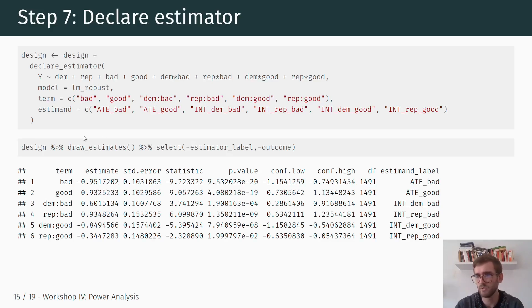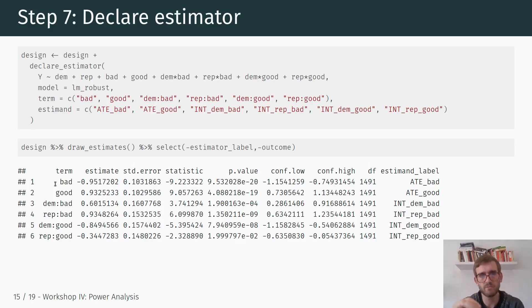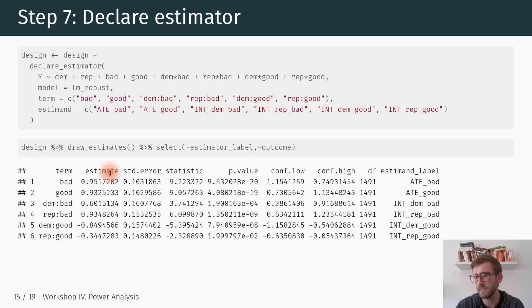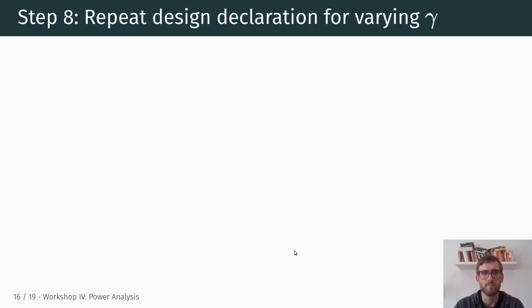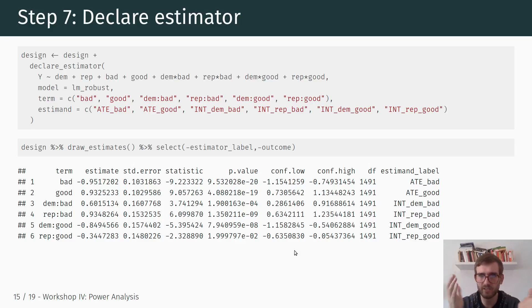After specifying the estimator, a useful step is to use the 'draw_estimates' command, which simulates one hypothetical dataset using the data generating process, uses our estimator, and provides an overview of what the estimates look like — the regression coefficients for the specific terms we wanted to extract, matched to the estimands we specified: the average treatment effect of bad and good frames and the respective interaction terms.